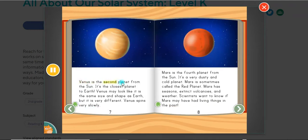Venus is the second planet from the Sun. It's the closest planet to Earth. Venus may look like it is the same size and shape as Earth, but it is very different. Venus spins very slowly.